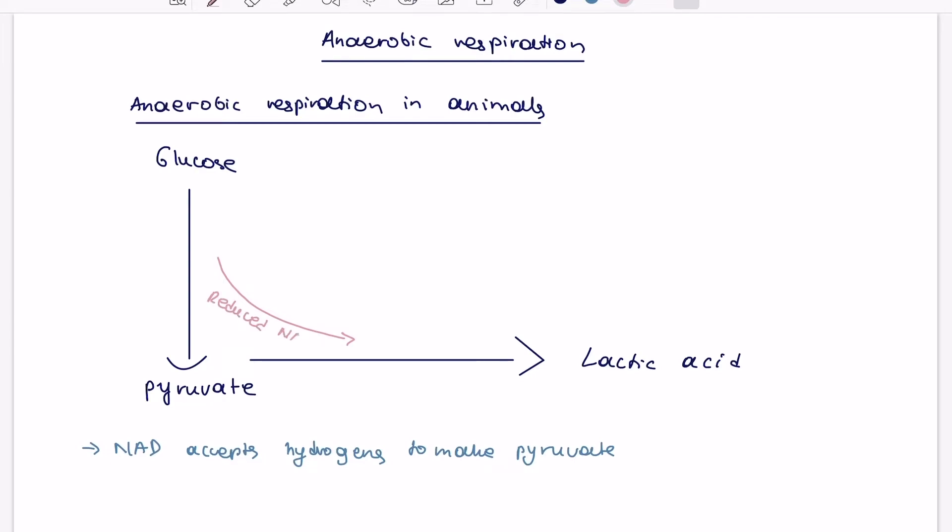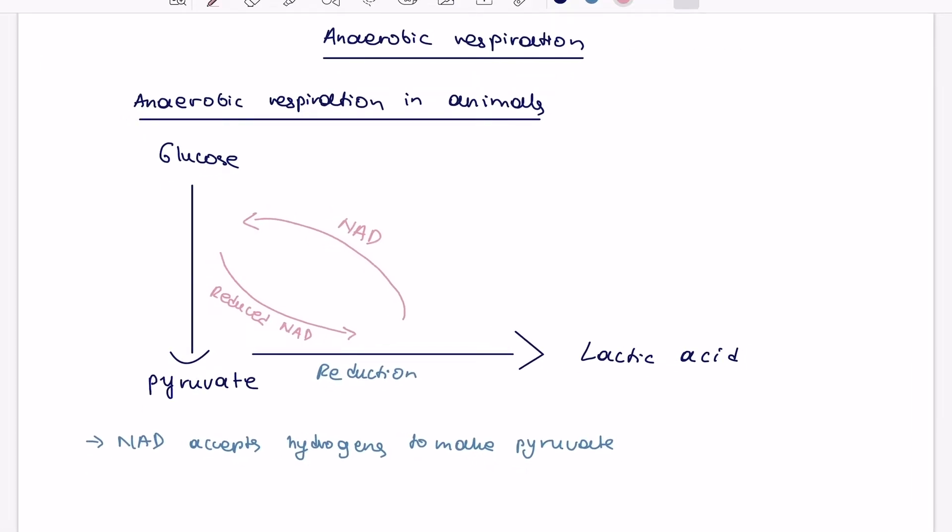And if it's a reduction reaction, then reduced NAD is used to donate a hydrogen. And therefore, once it donates a hydrogen, it will actually become again NAD, which can then go back to the glycolysis and then glucose can then be converted into pyruvate.